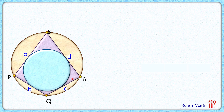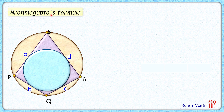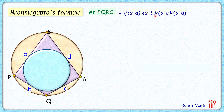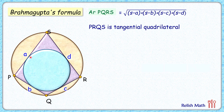PQRS is a cyclic quadrilateral, and the area of a cyclic quadrilateral can be found using Brahmagupta's formula: area = √((s−a)(s−b)(s−c)(s−d)), where s is the semi-perimeter and a, b, c, d are the sidelines.